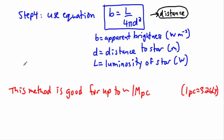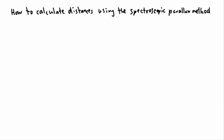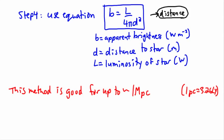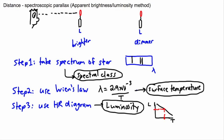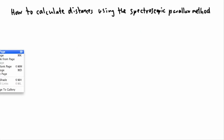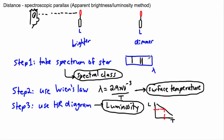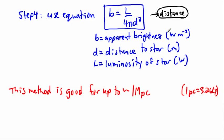So that's actually how we calculate the distances using this method. So this is how we actually use this method. Step one, take the spectrum. That gets you the spectral class. And you can also use Wien's Law, then, to tell the temperature. Once you have the temperature, use the HR diagram to get the luminosity. Once you know the luminosity, you can use this equation. And easy peasy, you're done. And this works for about up to 1 megaparsec.